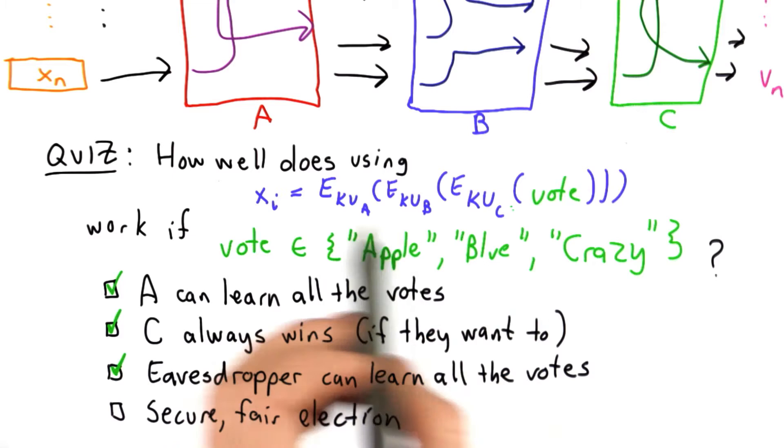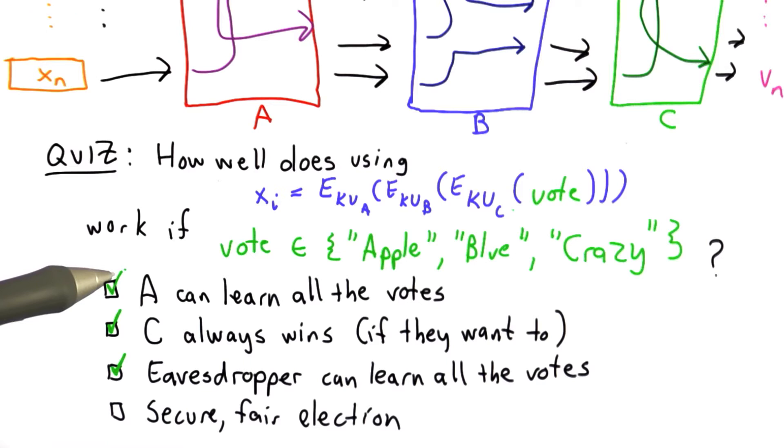You can compute the value of XI for the three possible votes, match that up to the incoming votes, know exactly what they are, so there's no anonymity for the voters.